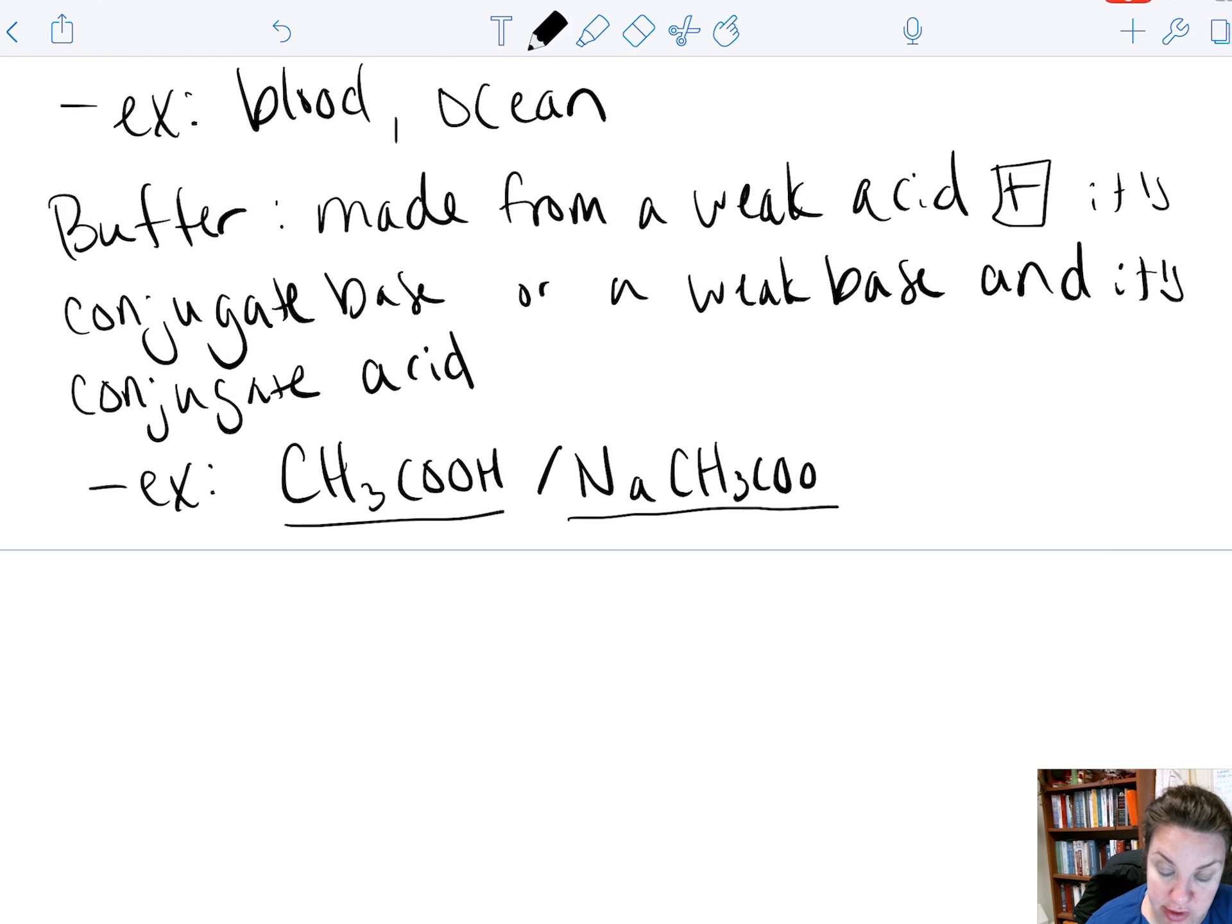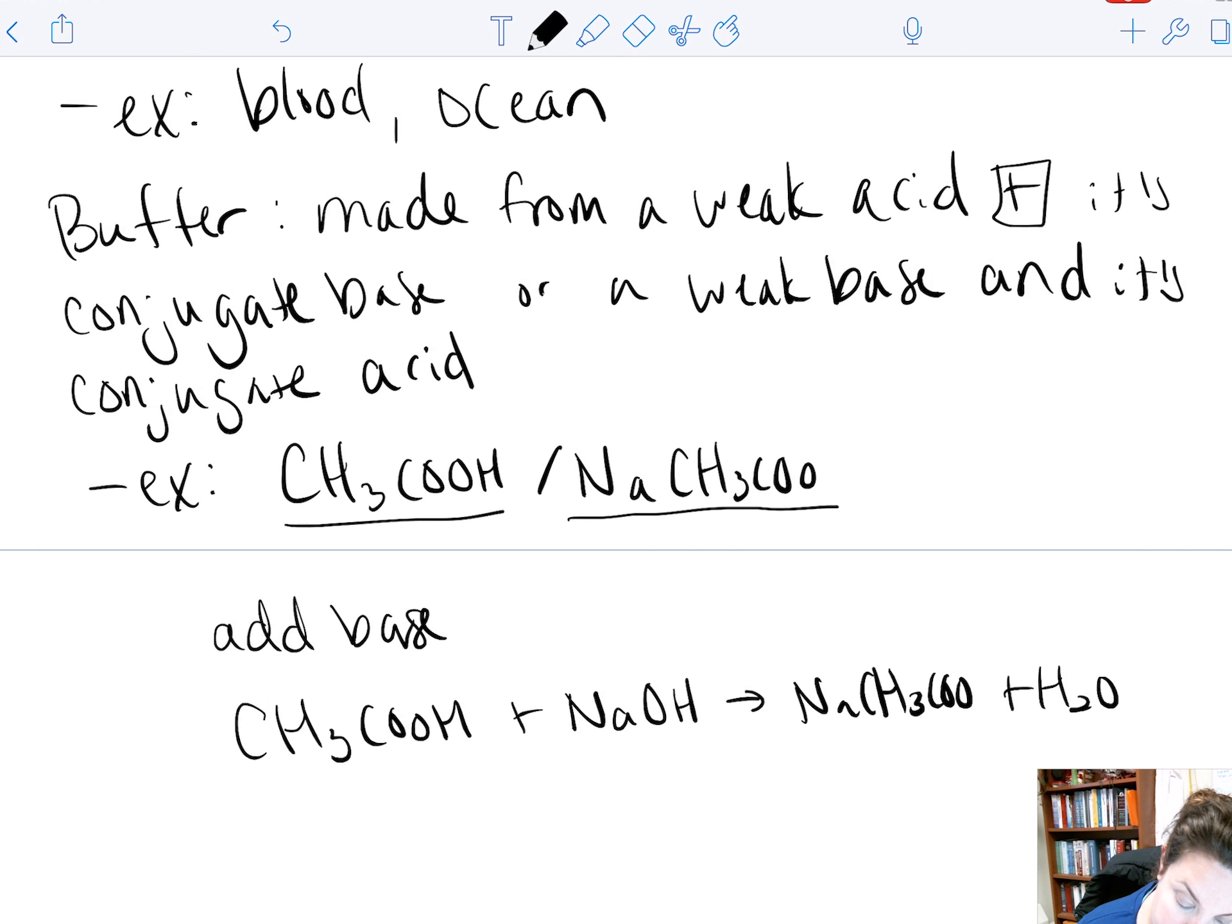So if we were to put small amounts of acid in here. So let's take this buffering solution. Let's actually add base first. So if we have CH3COOH. We add a strong base. We produce NaCH3COO plus water.